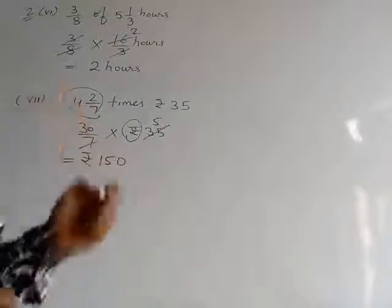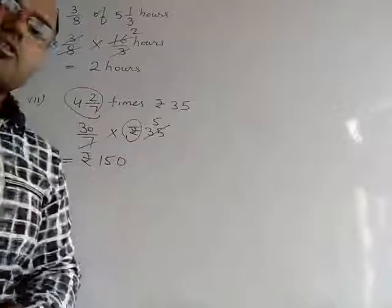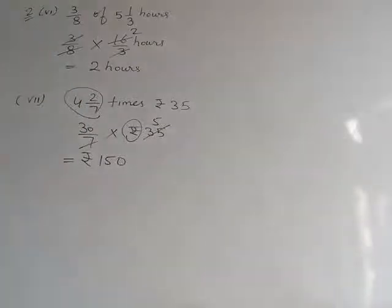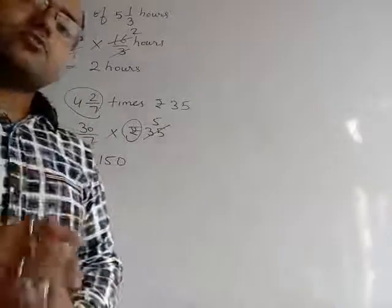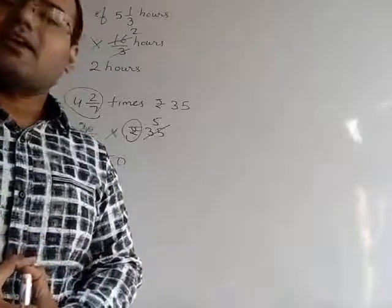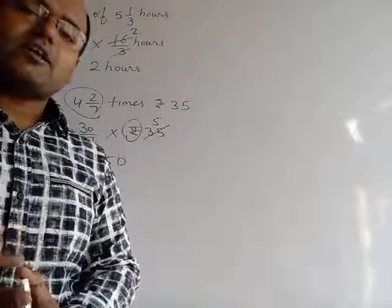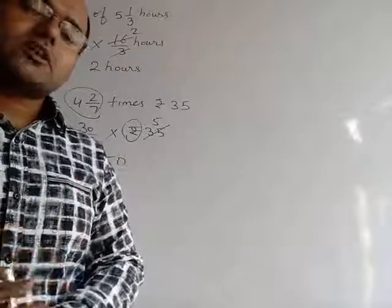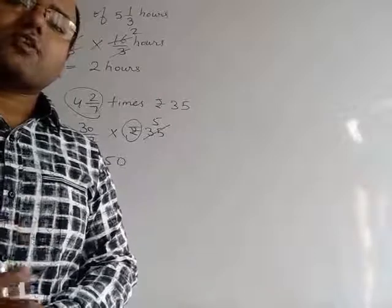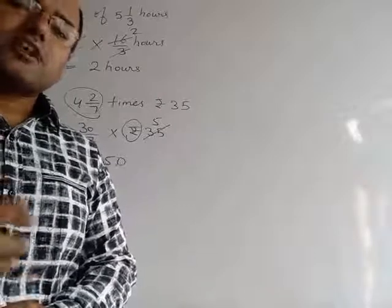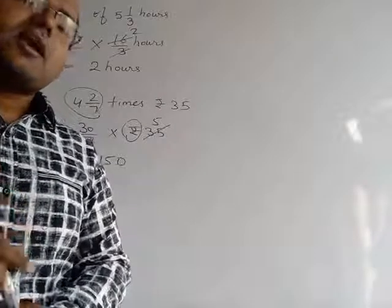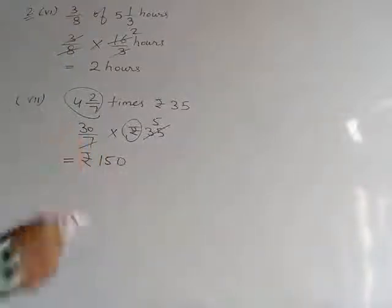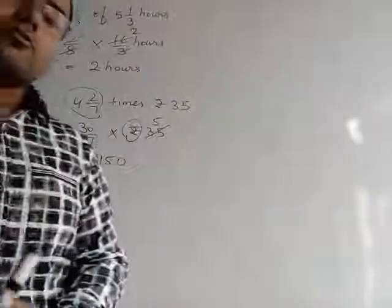So this is question number 2, part number 7. This question is now over. The rest of the parts you have to do by yourself. In the next video I will explain the remaining questions of this exercise. Your homework is to finish exercise 2A and exercise 2B up to question number 2 in your fair copy.